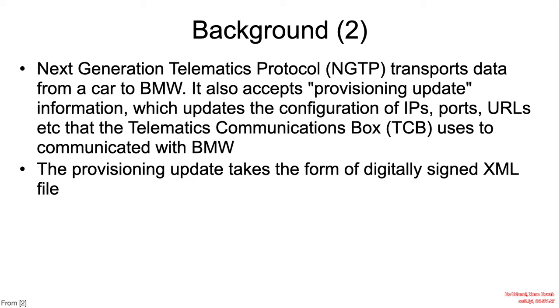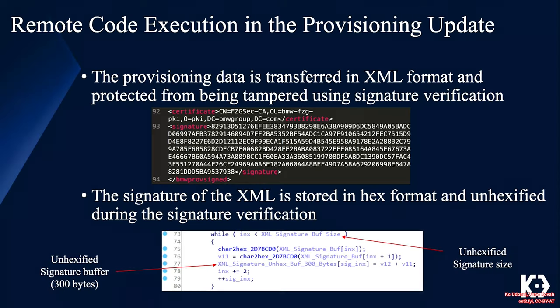The provisioning updates, which configure what the telematics communication box uses to communicate with BMW, take the form of a digitally signed XML file. The provision data is transferred in XML format and is protected from tampering using signature verification. However, the signature of the XML file is stored in hex format and unhexified during the signature verification.